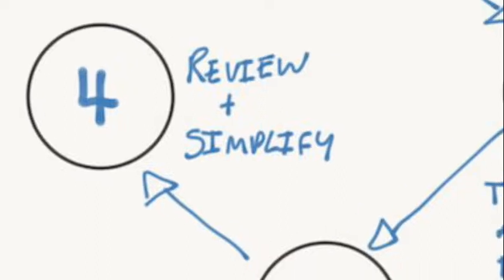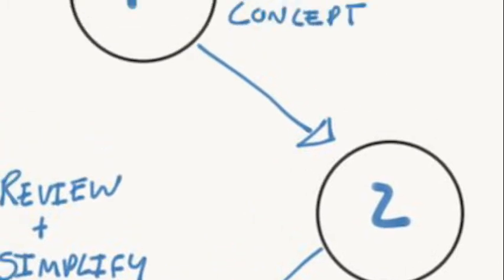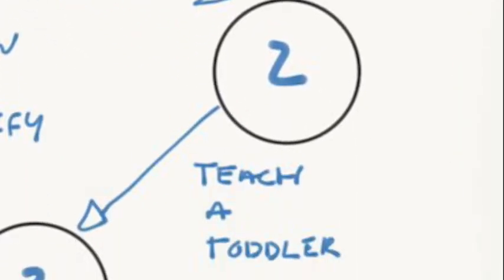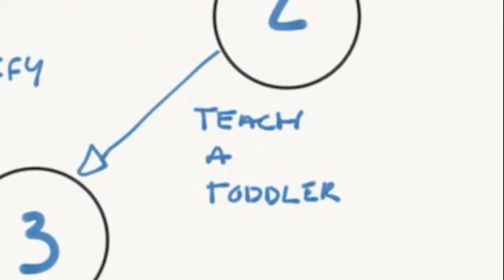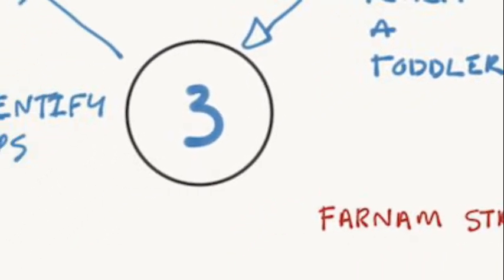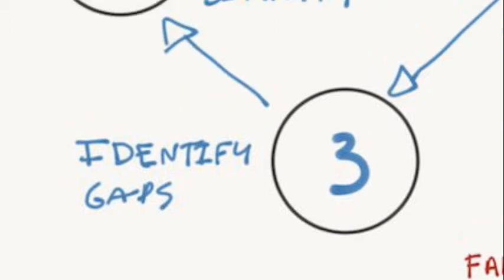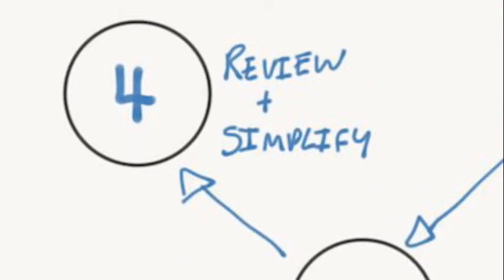Essentially, you then repeat this whole process and you start again at step one, which is choose the topic. Step two, to teach a young person or person who lacks the knowledge. Step three, to identify the gaps again, to see can you teach this topic to this person who lacks a basic background of the topic that you're trying to teach or a young person, and then again, review and try to simplify it.